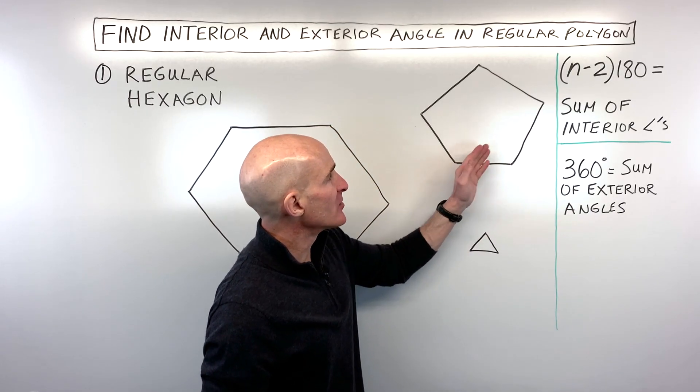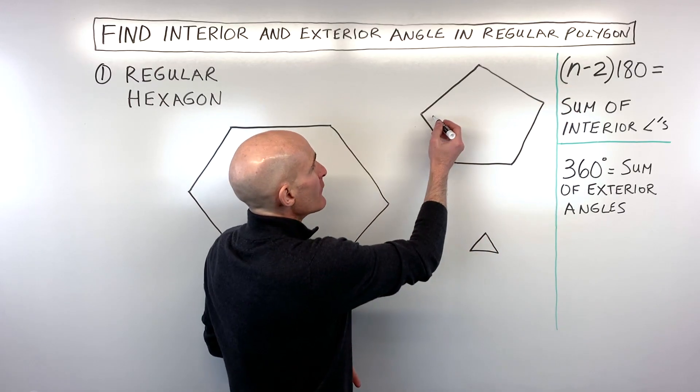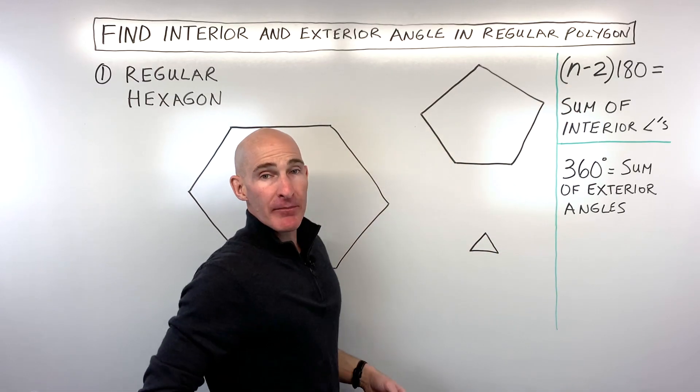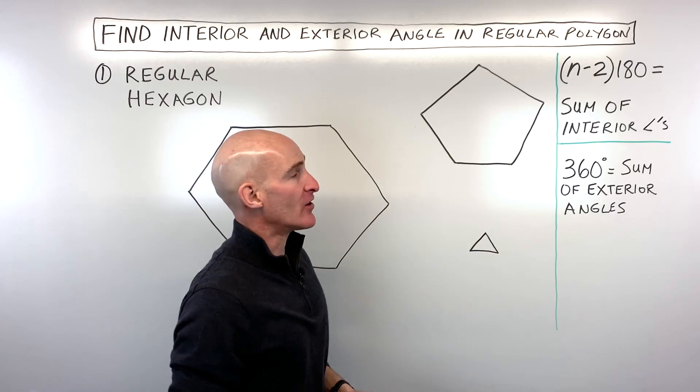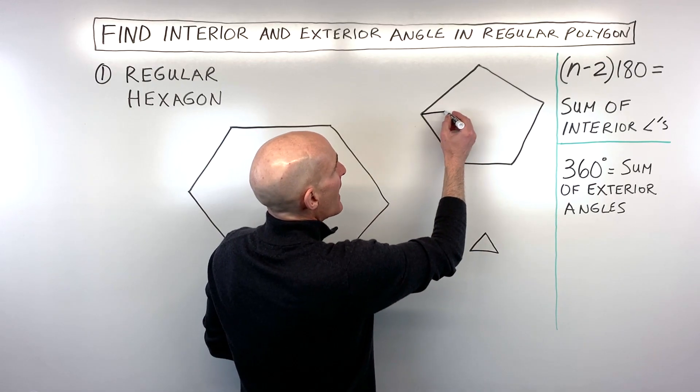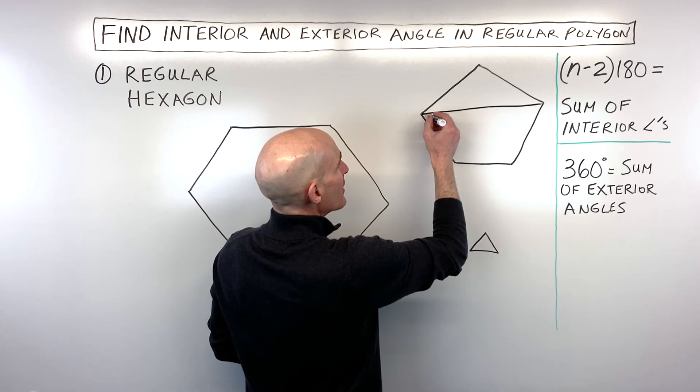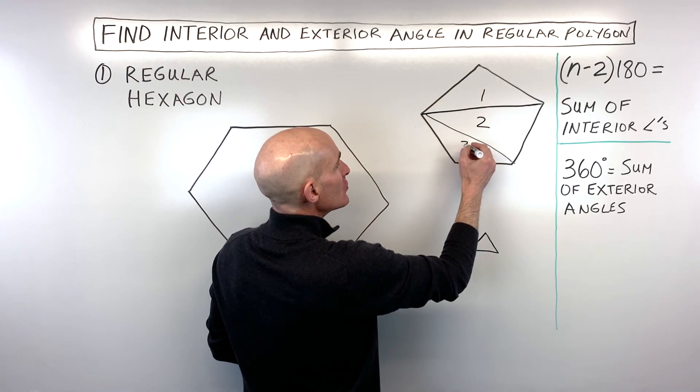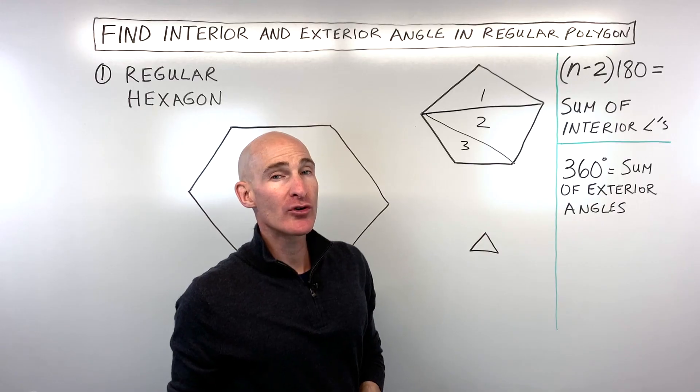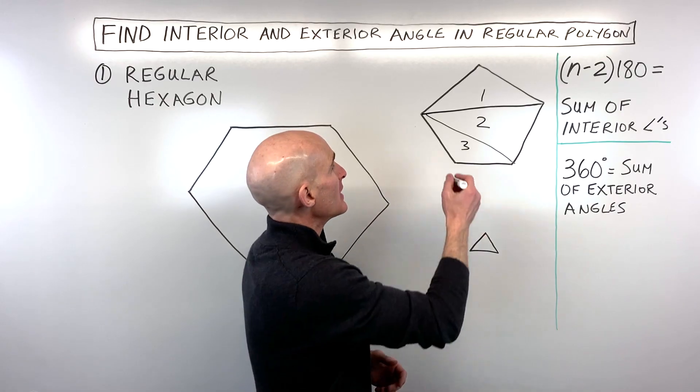So just to kind of illustrate, why does this formula work? If you were to take, say, for example, a pentagon—a pentagon has five sides or five angles. You can subdivide it into how many triangles? Well, you can see there's one, two, three triangles.